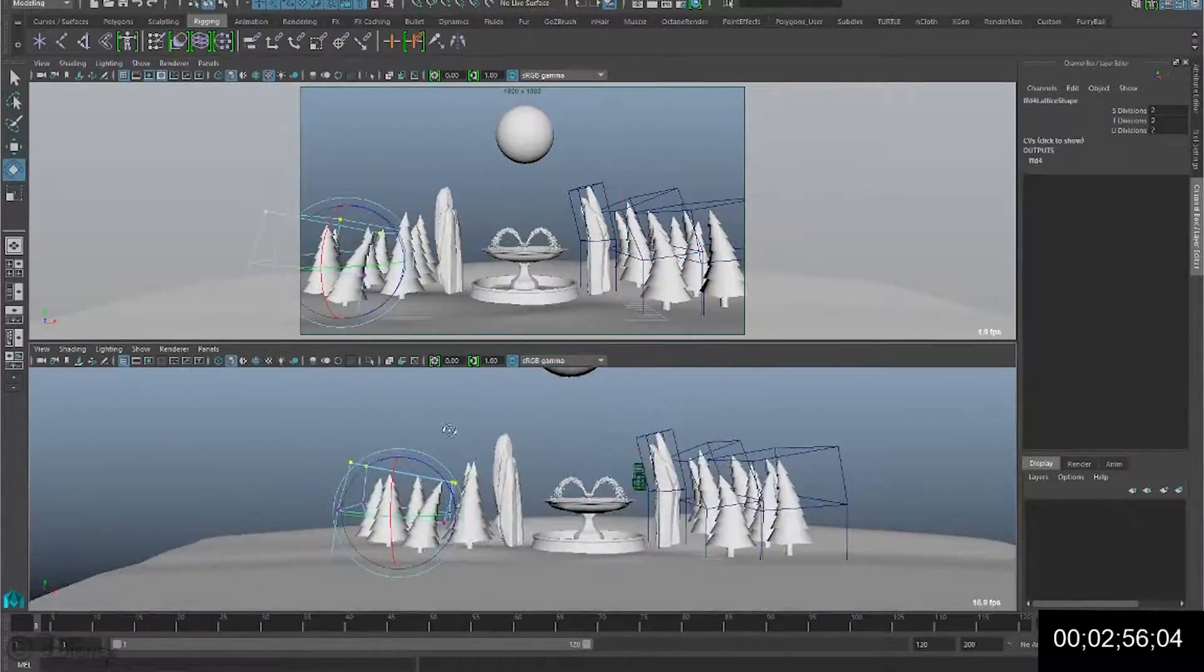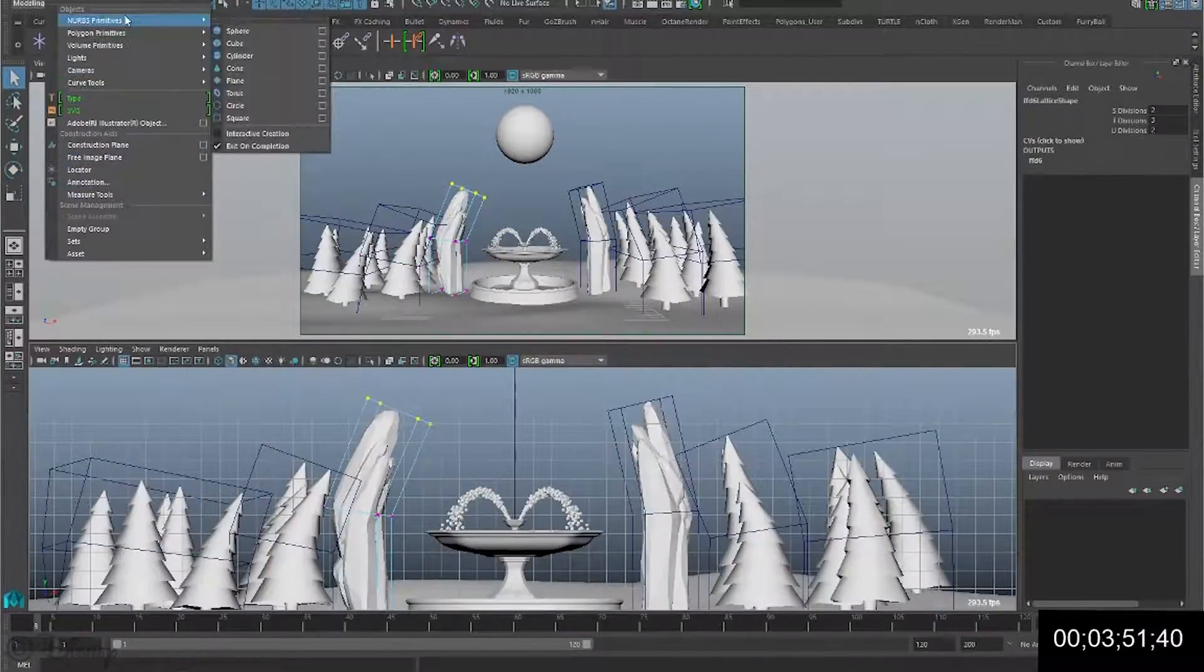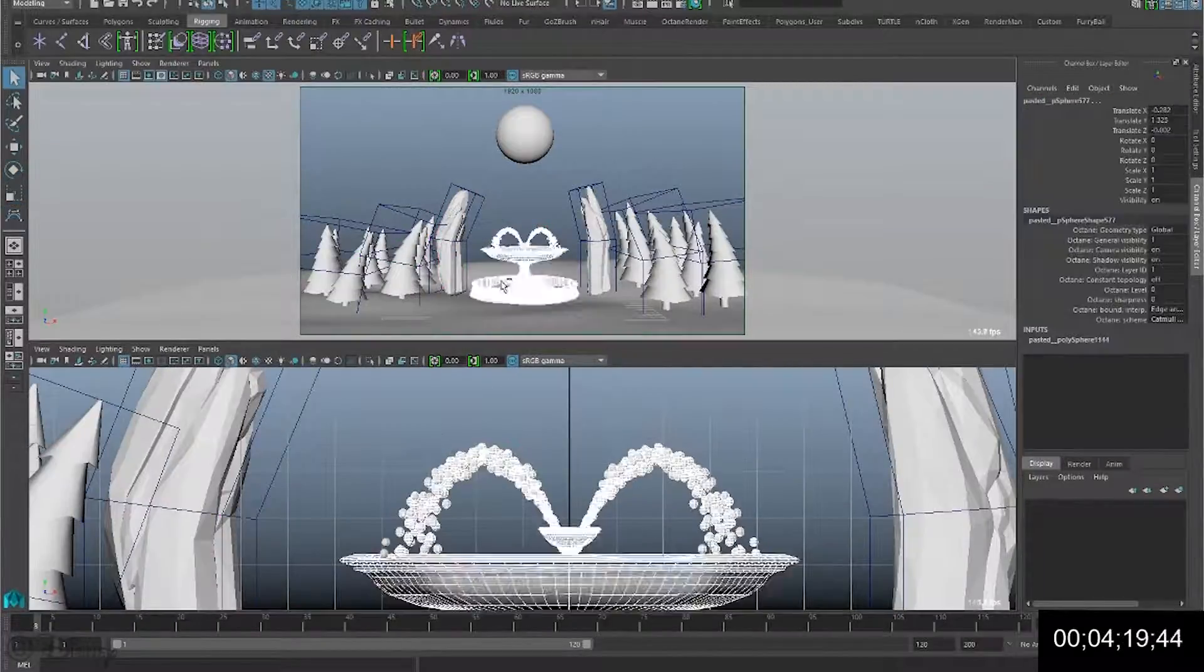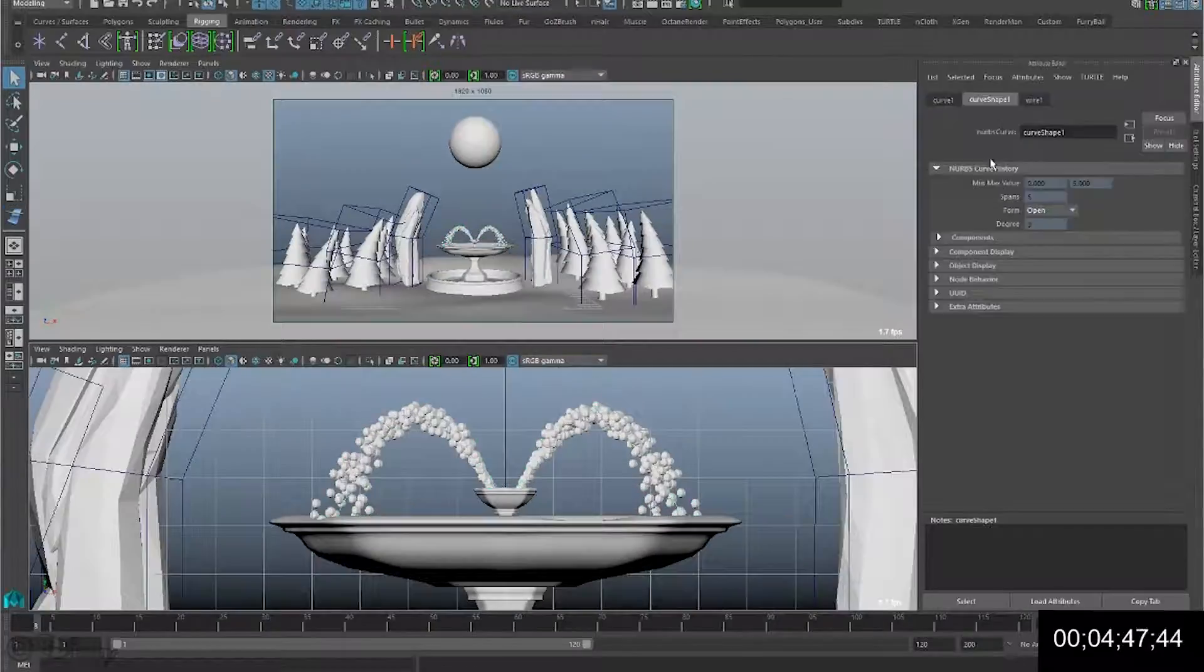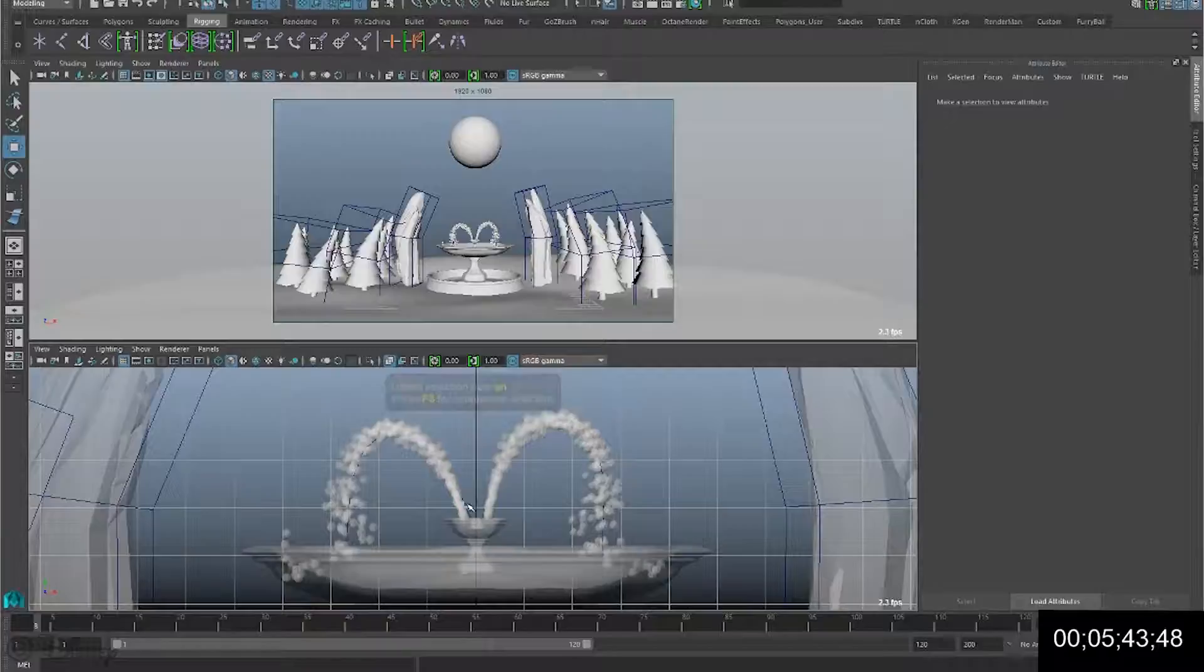It requires manually setting up different kinds of deformers for different types of objects, for example lattice and wire deformers, and then deforming the shapes by clicking and dragging on individual controls one by one while adjusting the camera viewpoint.